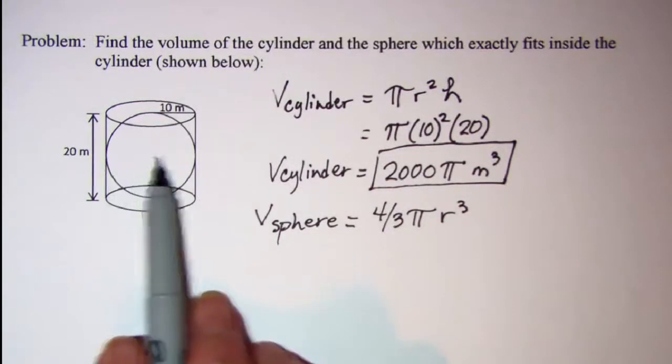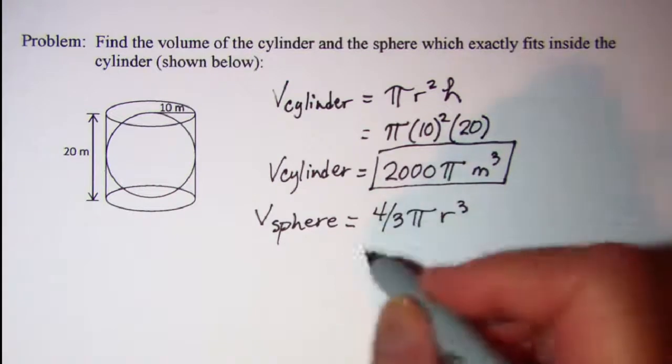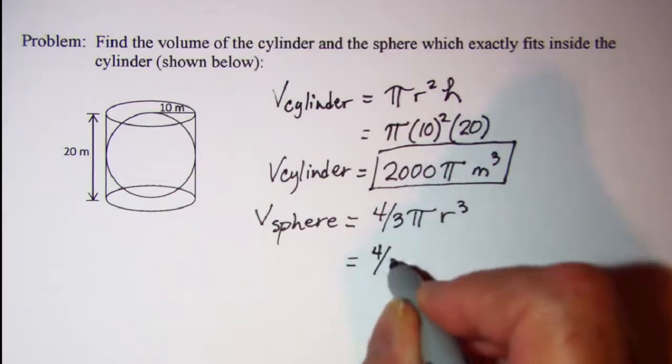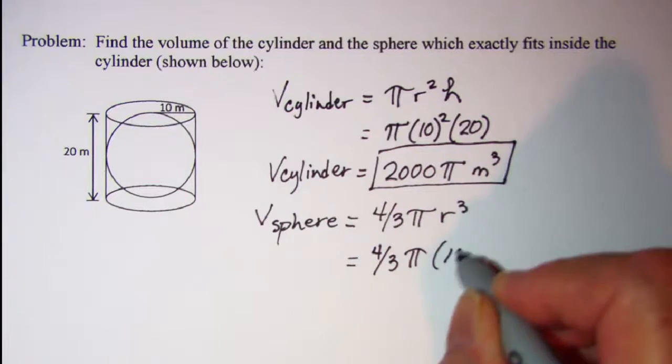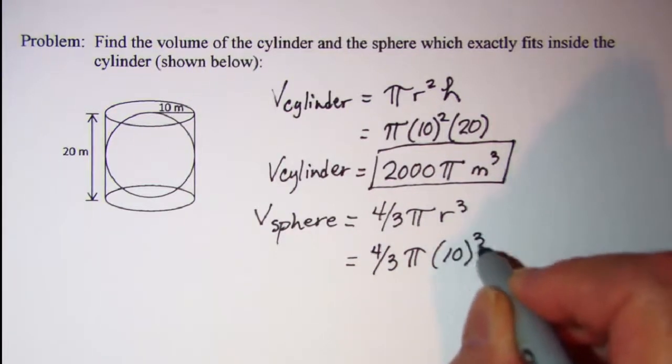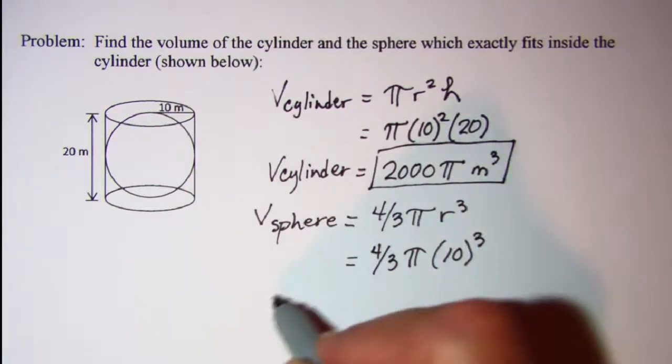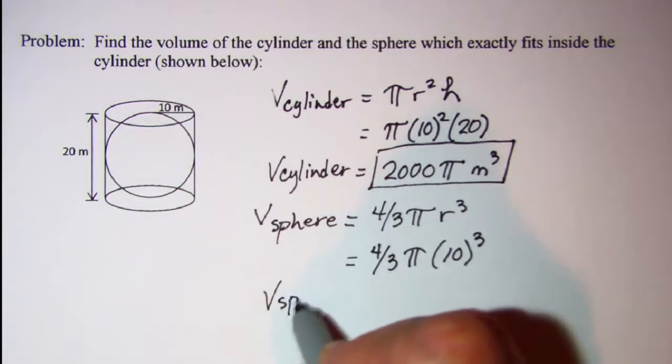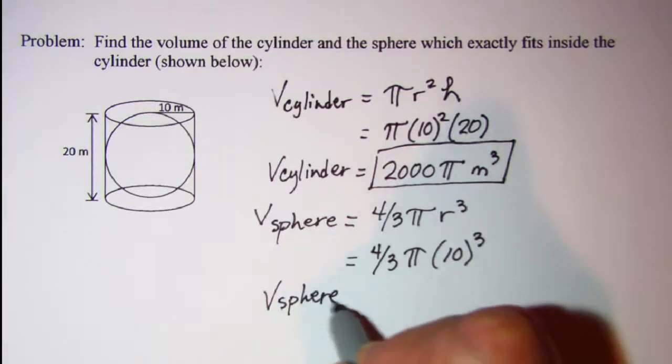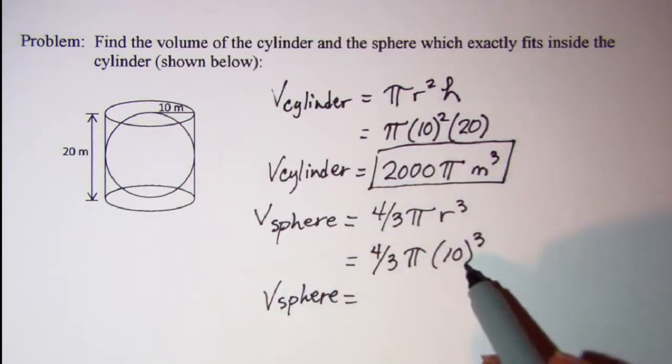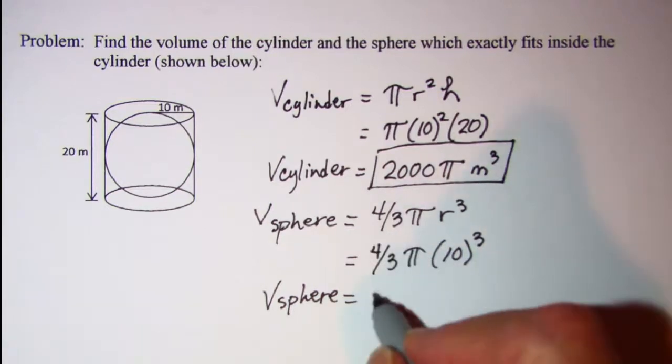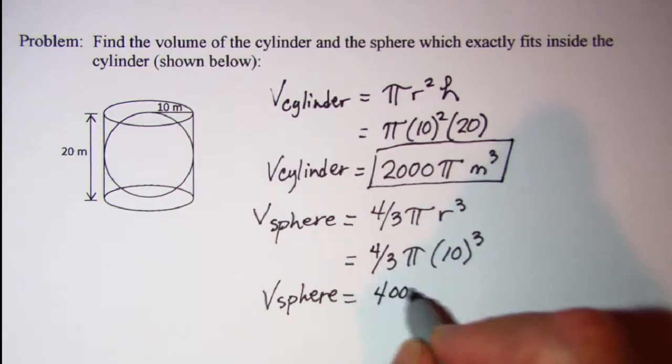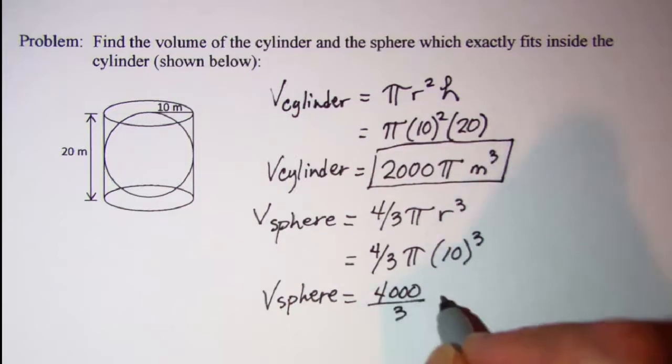Our sphere has a radius of 10 also, so 4 thirds pi times 10 cubed. So the volume of our sphere is, this is 1000, so we have 4000 thirds pi meters cubed.